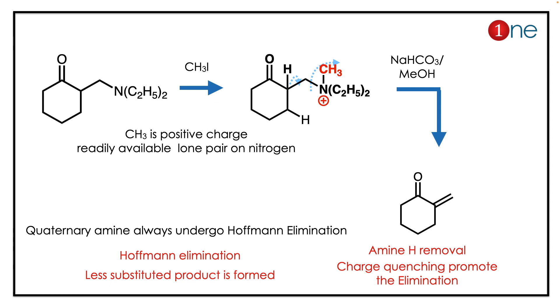The less hindered carbon goes away — here the Hofmann elimination occurs. The final product is an alkene, specifically a conjugated alkene coming from an exocyclic double bond. So the final product is a cyclic compound with the double bond positioned exocyclically.